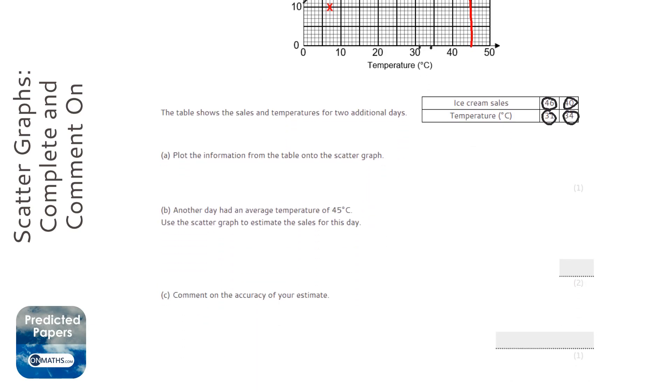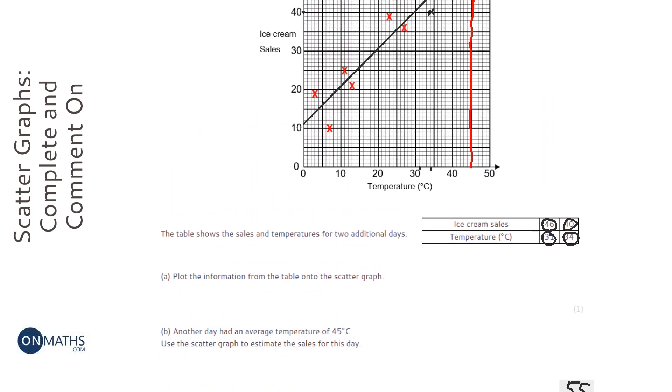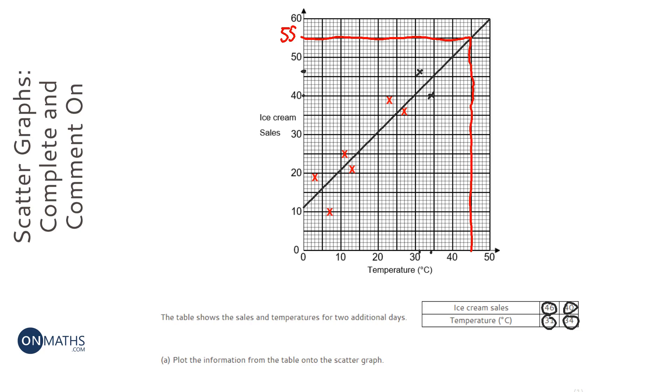So we've got 55 sales we're predicting. Now, what do we notice about this? Well, look at where all the data is. All the data is here, and yet we're estimating outside the range of the data. It's called extrapolation when you do that.